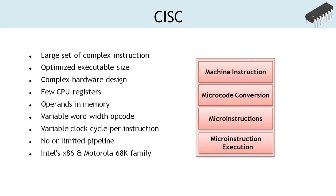Also, the clock cycles per instruction are different for different instructions. Due to these characteristics, the CISC processor either does not implement CPU pipelining or has limited pipeline stages. The CPU pipeline is discussed in detail in later sections with reference to the ATmega 328 microcontroller. The compiler used for generation of executable code is relatively simple for CISC processors. Intel's x86 series of processors and the Motorola 68K family are based on CISC architecture.